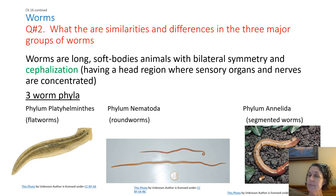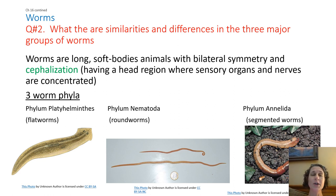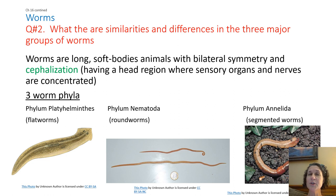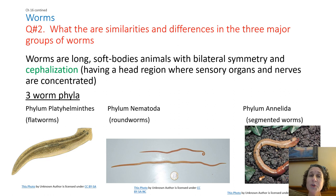That's where their nerves are concentrated. For us, the same is true — we have a brain in our head, we have eyes, ears, nose, all of those sensory organs right in one spot. Worms are the same. Obviously their sensory organs are less specific, less useful than yours may be in some cases, but nevertheless, there they are.